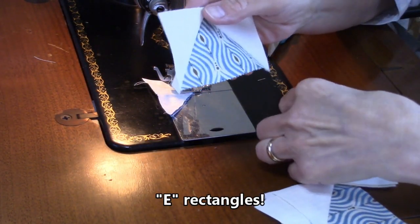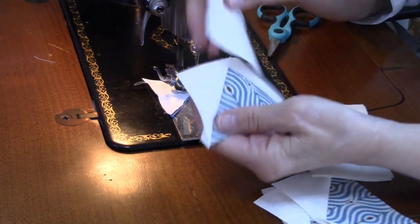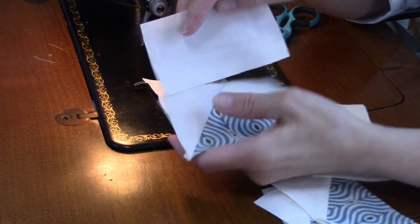Next thing I need to do is to sew an E triangle to the top of each one of these flying geese units, just like this.